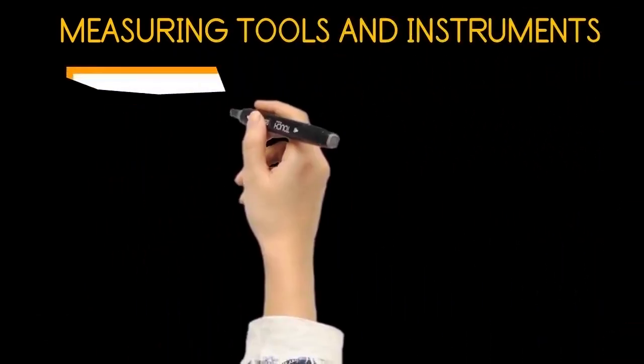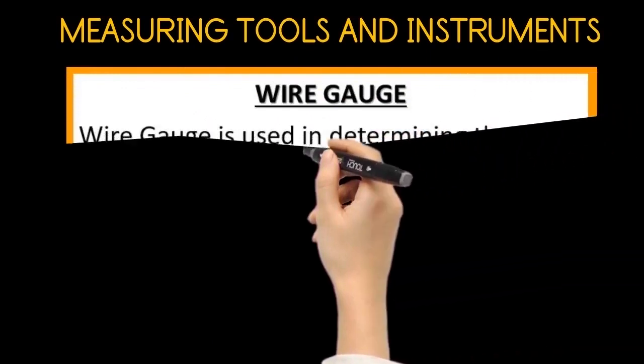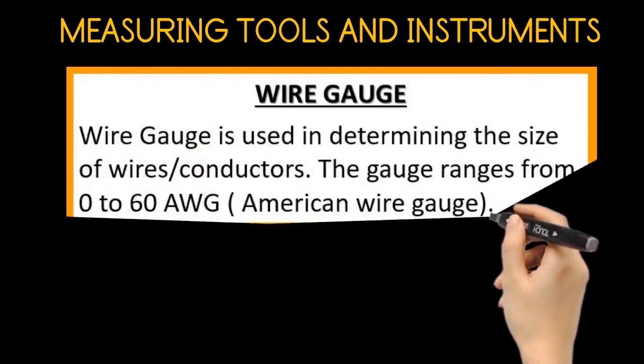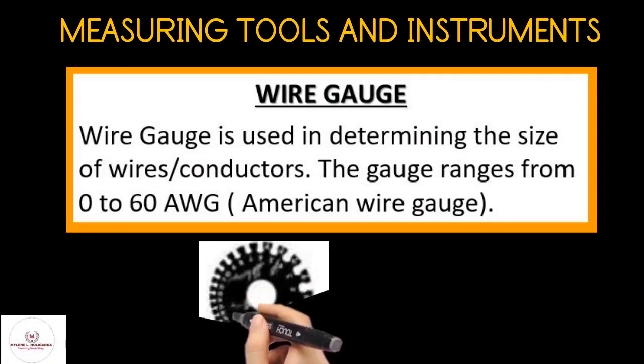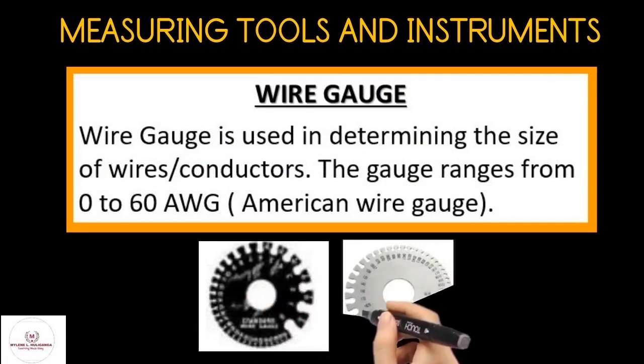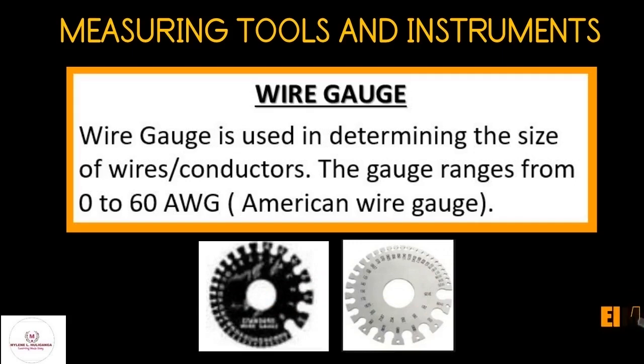The next tool is the wire gauge. The wire gauge is used in determining the size of wires or conductors. The gauge ranges from 0 to 60 AWG or American Wire Gauge. Here is an example of wire gauge.